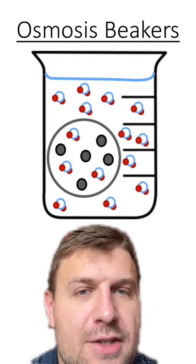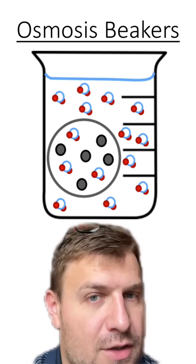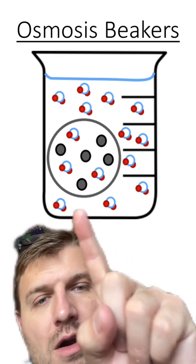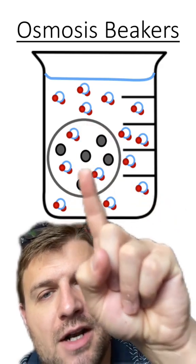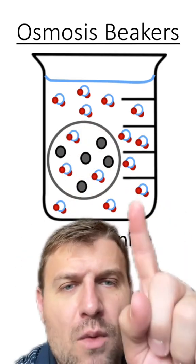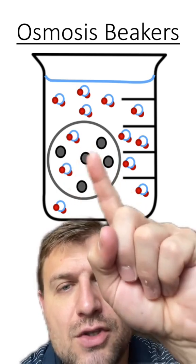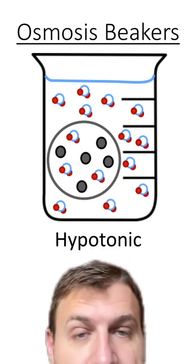What about this beaker? Does this show an isotonic, hypertonic, or hypotonic solution? You can see there's a lot more water on the outside of the cell compared with inside the cell. This means that water is going to travel into the cell and the cell is going to swell, making this a hypotonic solution.